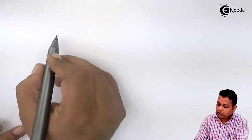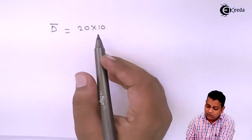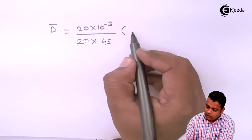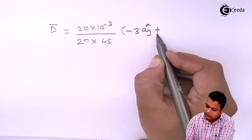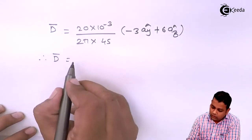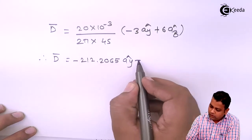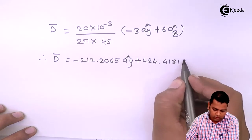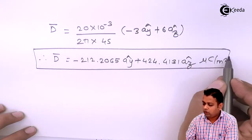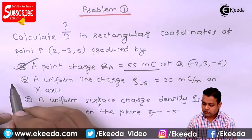Substituting into the formula for D bar: D bar = [20 × 10⁻³ / (2π × 45)] × (−3 a_y + 6 a_z). The result is D bar = −212.2065 a_y + 424.4131 a_z microcoulombs per meter square. This is the required answer for Part B — the electric flux density at point P produced by the uniform line charge.